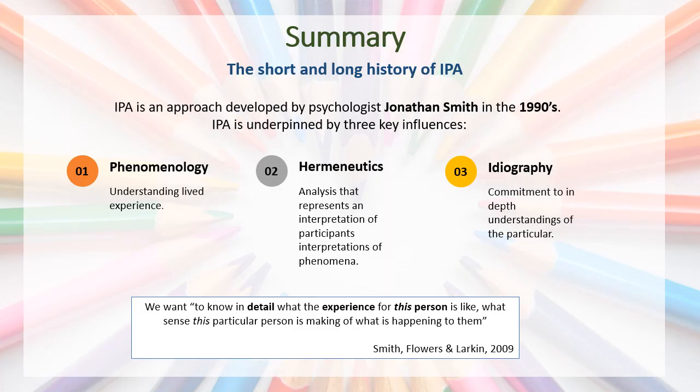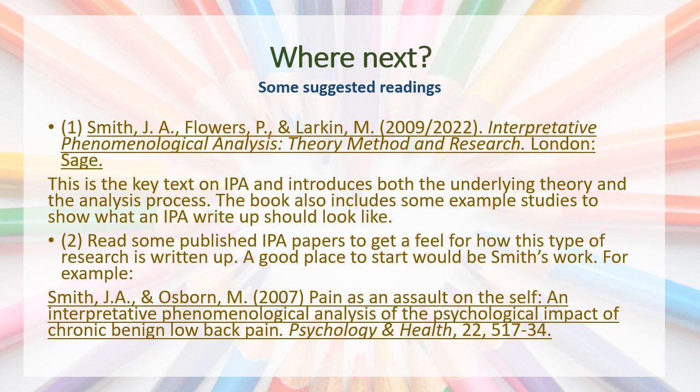So in summary, the short history of IPA is that it was an approach developed by Jonathan Smith in the 1990s. The long history relates to the philosophy underpinning the three key influences for the approach: phenomenology, hermeneutics and finally idiography. When we use IPA we want to know in detail what experience for this person is like and what sense this person is making of what is happening to them. This was a very brief introduction — there's a lot more to read on the subject, and the interested could even go back to the texts of the philosophers mentioned in this talk. However, for a comprehensive exploration of these concepts a good place to start would be the Smith, Flowers and Larkin text. I hope you've enjoyed this introduction to IPA and I hope you're looking forward to getting started and conducting some analysis.